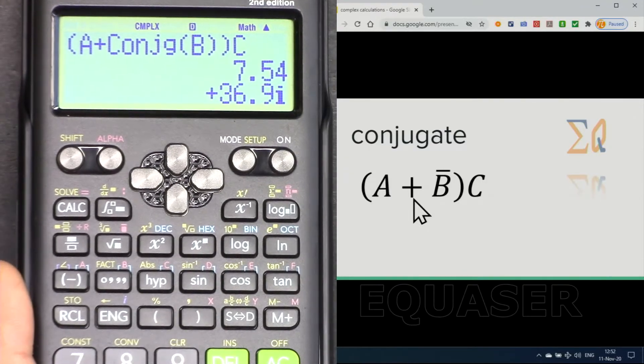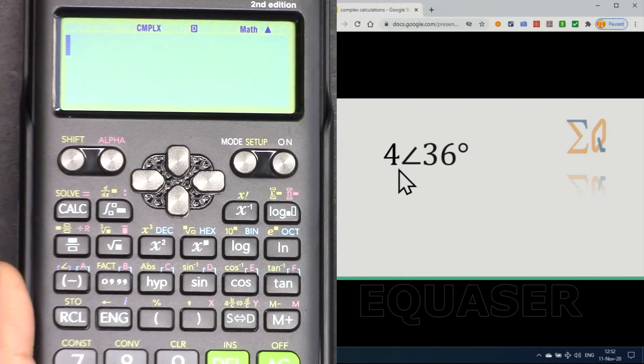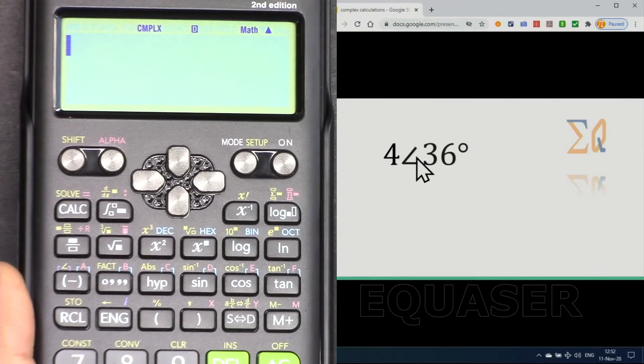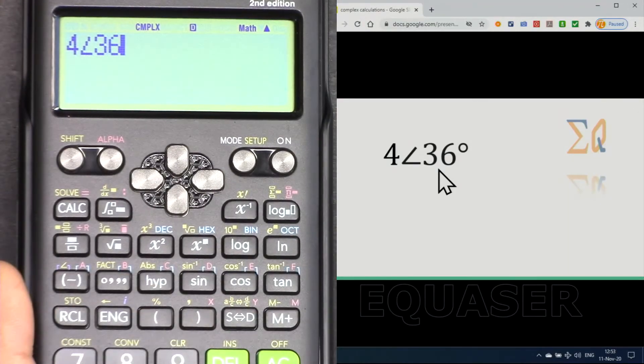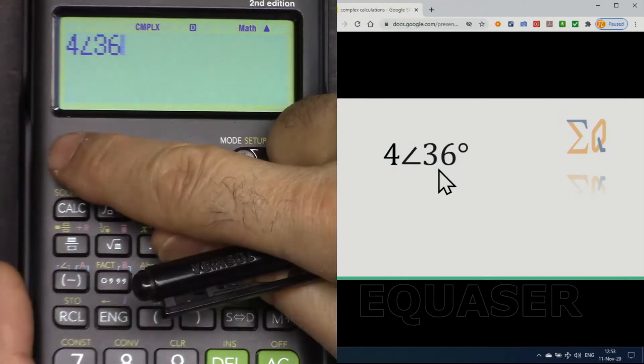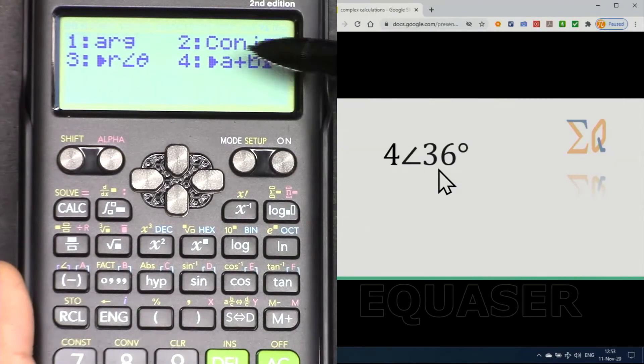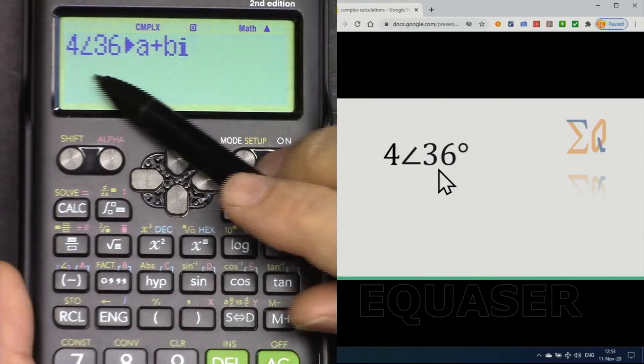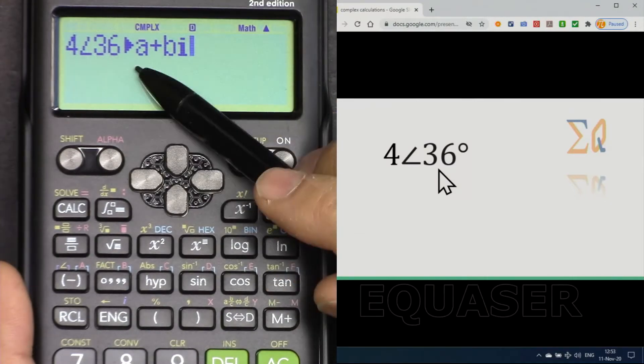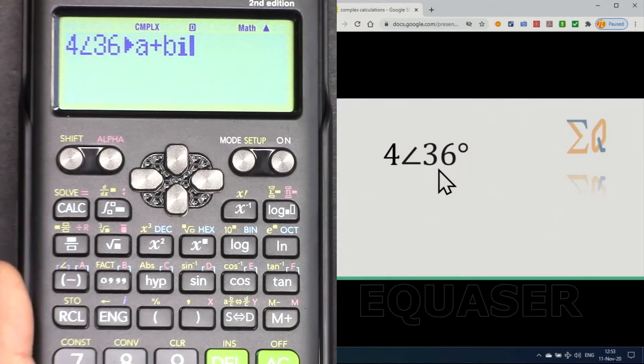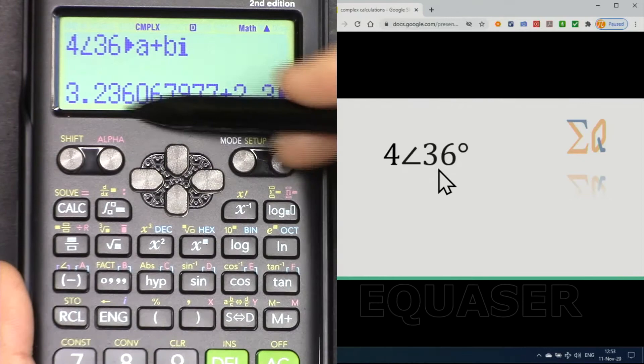If you want to convert this to a real and imaginary format, first enter the value: 4, shift angle, 36. Then we can convert it by pressing shift, complex number 4. In this case, this format of vector magnitude and angle will be converted to real and imaginary format. Press equal sign and you will see it like this, or press this button to see as real and imaginary.